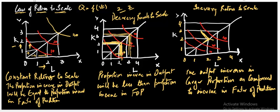To summarize: in the case of constant returns to scale, output increases in the same proportion as the increase in factors of production. In the case of increasing returns to scale, output increases in a greater proportion compared to the increase in factors of production. While in the case of decreasing returns to scale, output increases in a lesser proportion than the increase in factors of production.